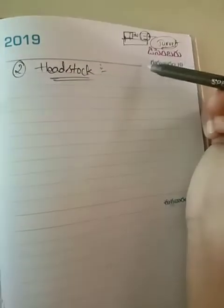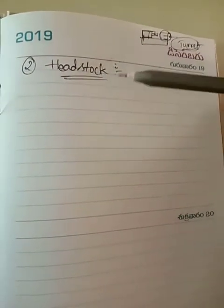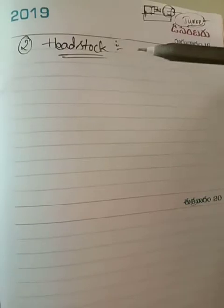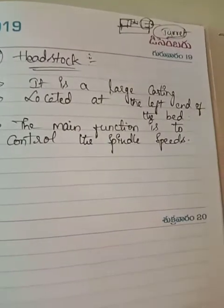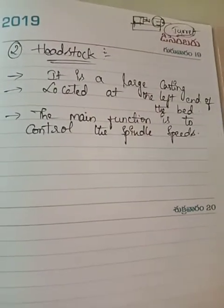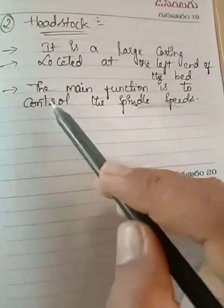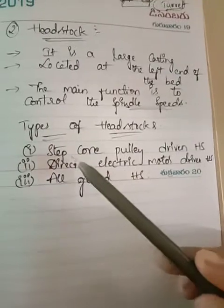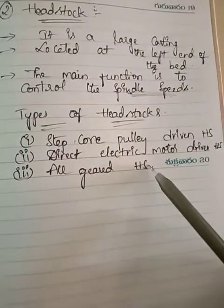The function of the headstock is to provide rotary motion to the workpiece under various spindle speeds. It is a large casting located at the left end of the bed. The main function of the headstock involves different types of headstocks, of which there are three types.